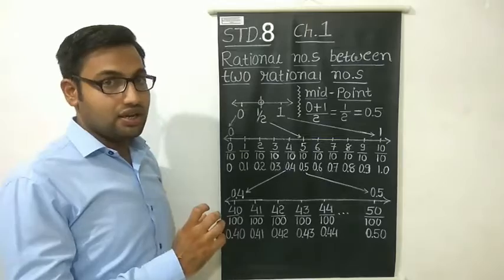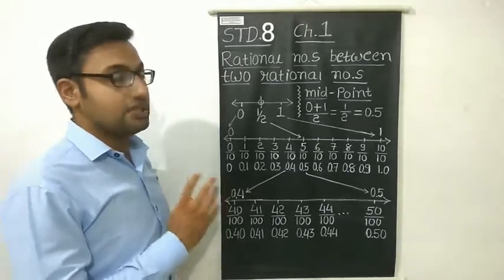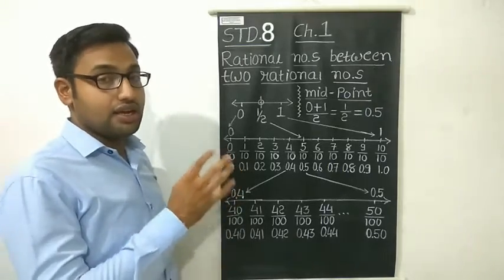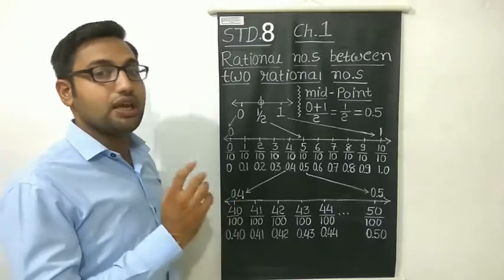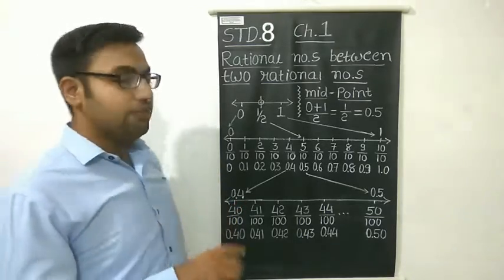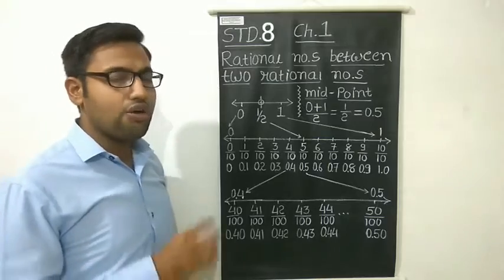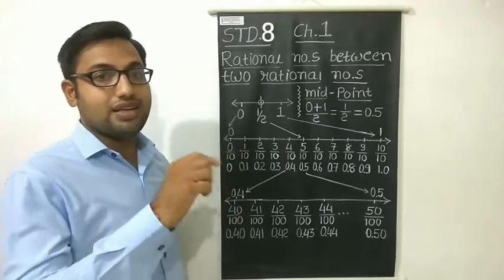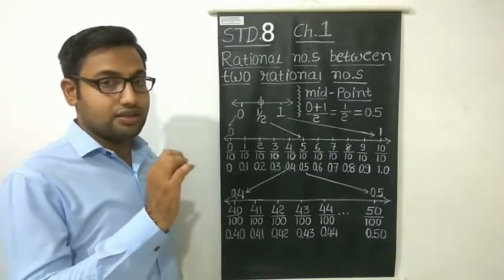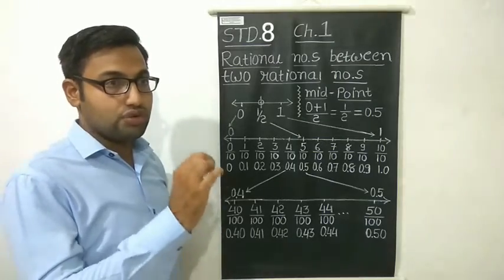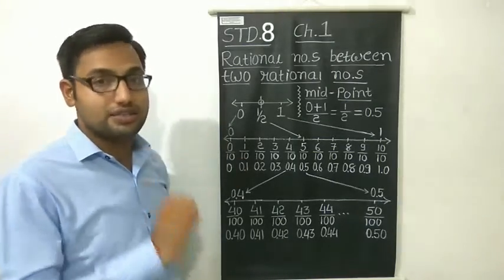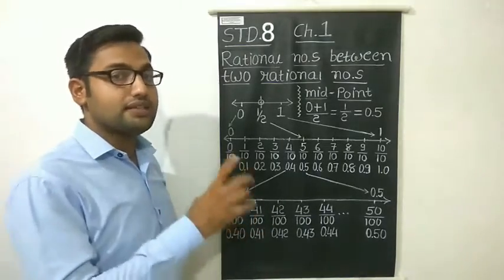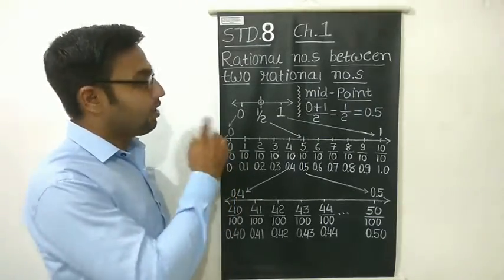In the previous lecture, we studied the introduction of this chapter. So now we know that there are number sets that are natural numbers, whole numbers, integers, and rational numbers. So if you ask the question: how many natural numbers are there between 1 and 7? You can answer that there are 2, 3, 4, 5, and 6 between 1 and 7. In the same way, you can easily answer this question for whole numbers and integers.